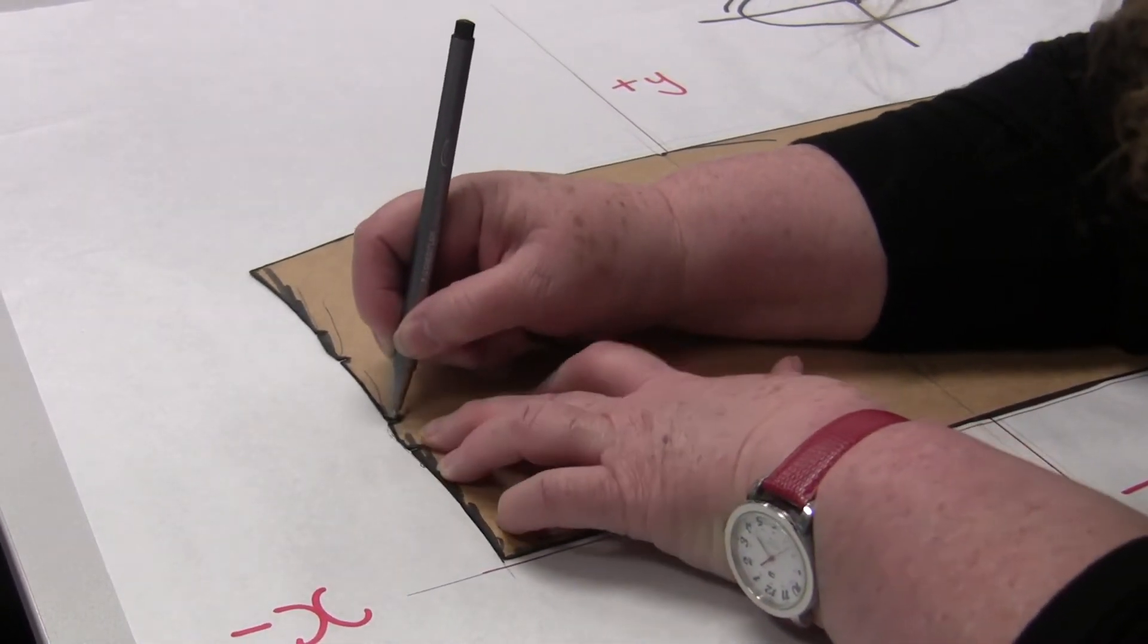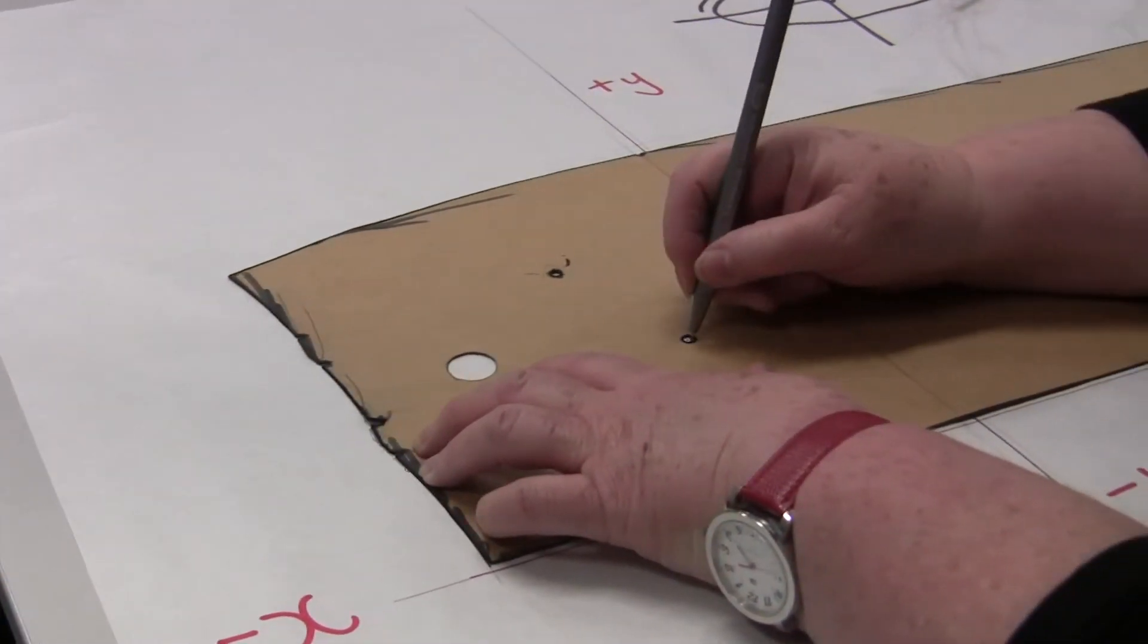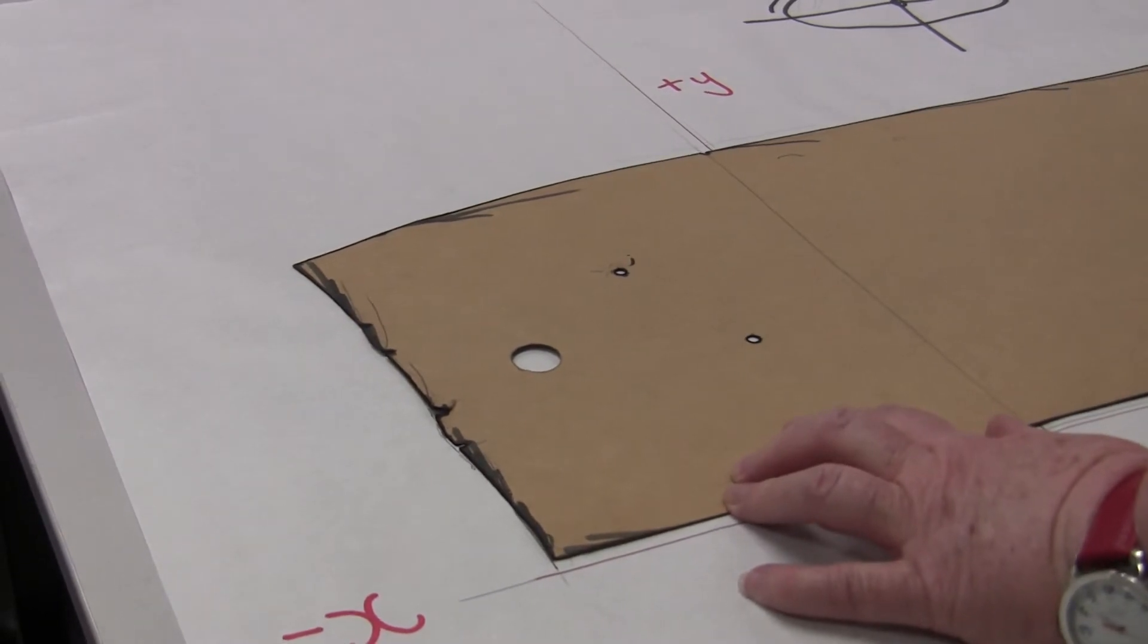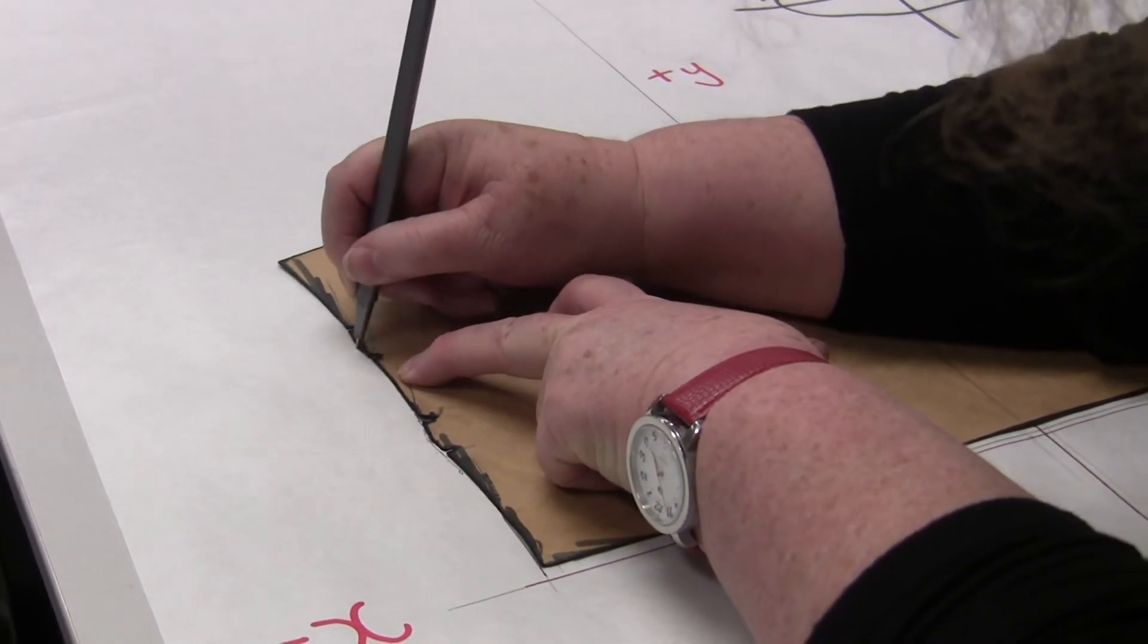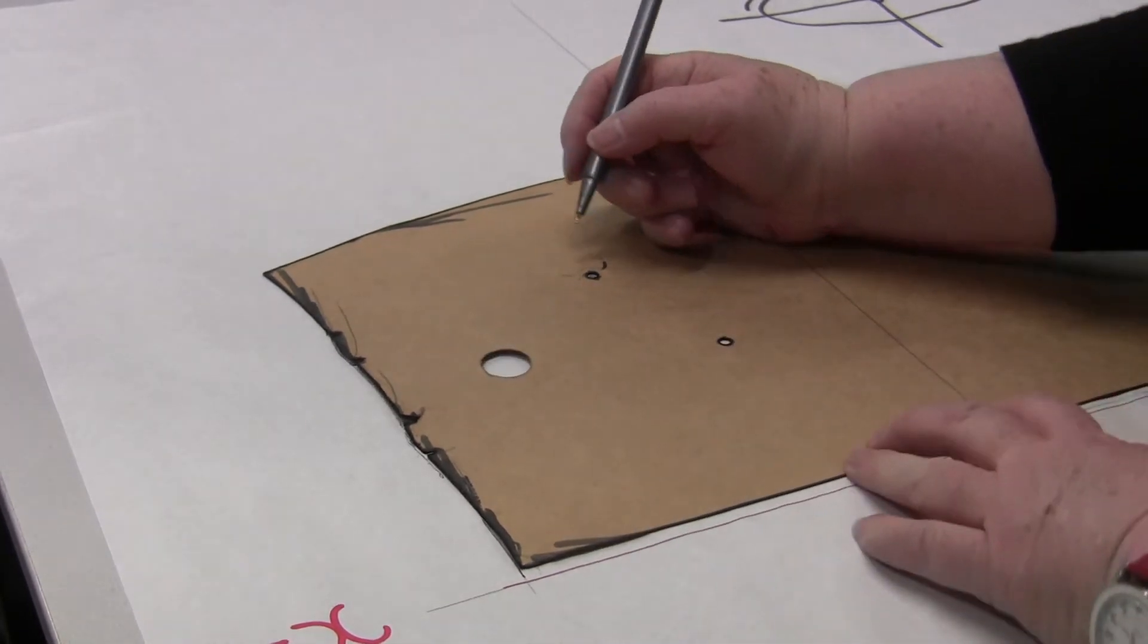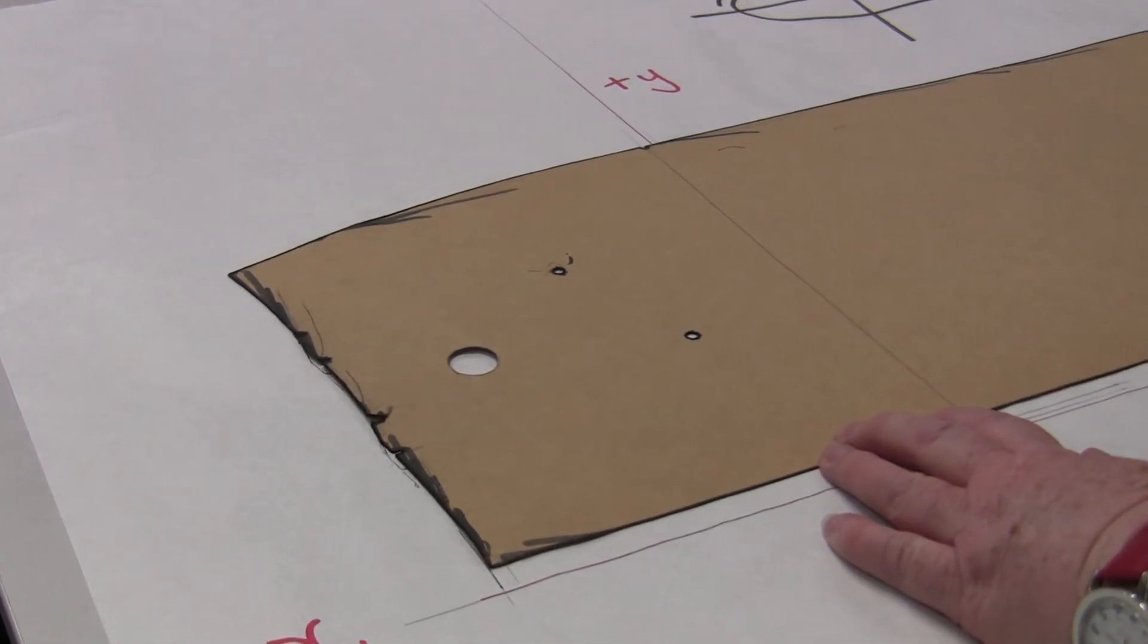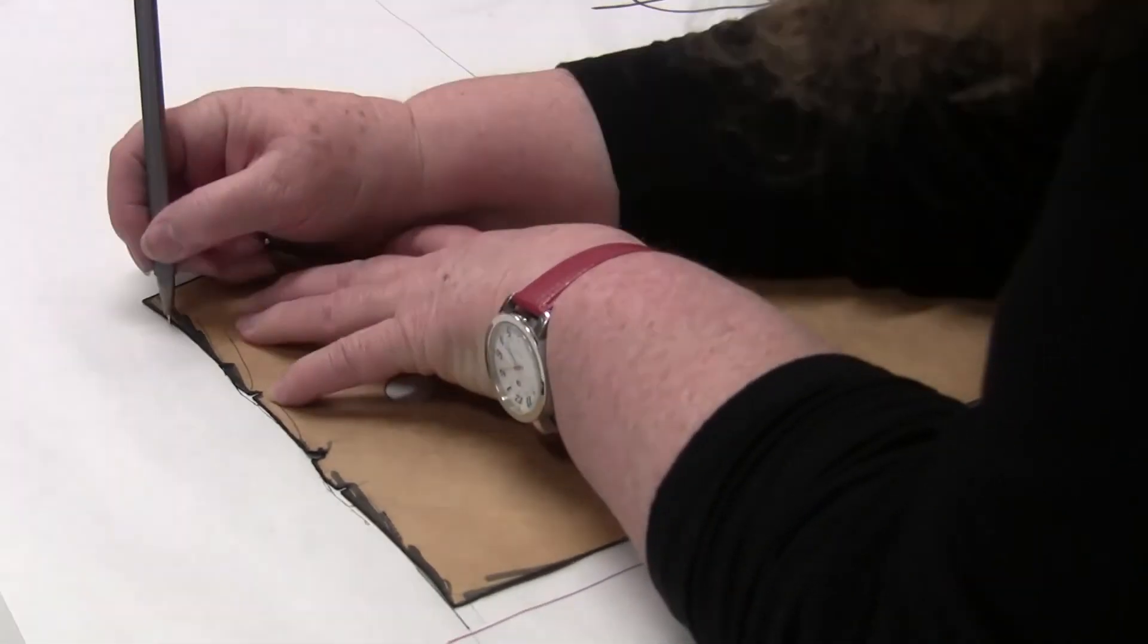I mark out the top of the dart and the dart drill. The second dart, another 3, still maintaining the length and the top of that dart and the drill hole. Then the last little bit is to the side seam, still maintaining the length at 6 between the waist and the hip and then this corner here.